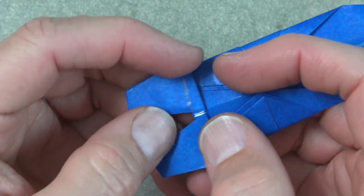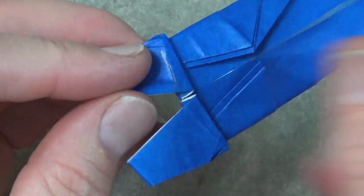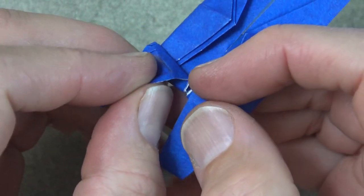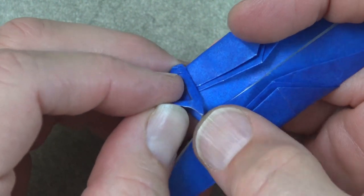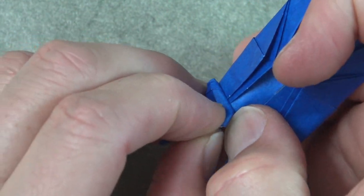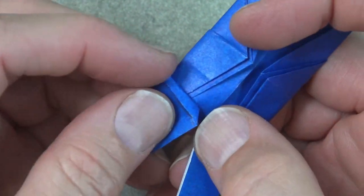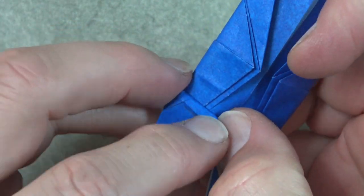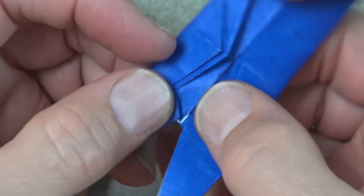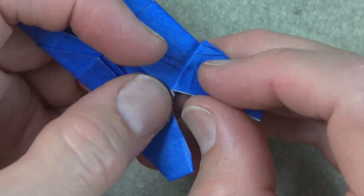That was the hardest step I think. Now we're going to reverse fold this point. So basically just push it in a little bit like that. And repeat on this side.